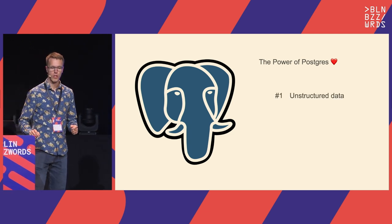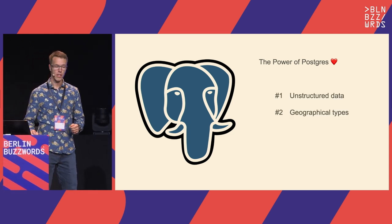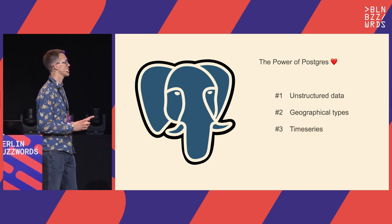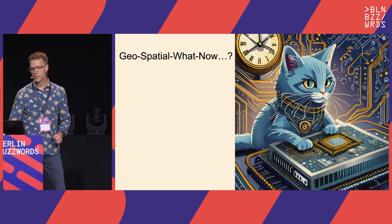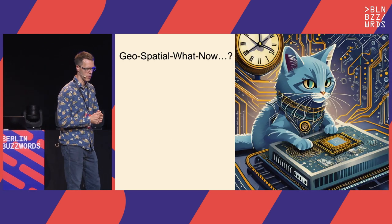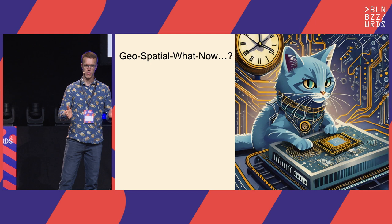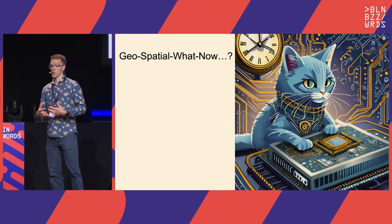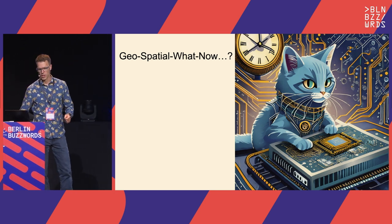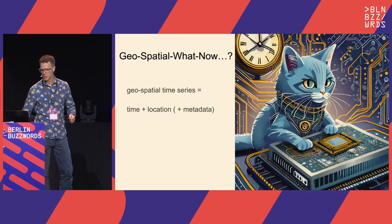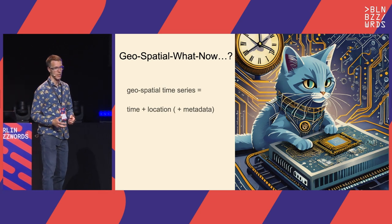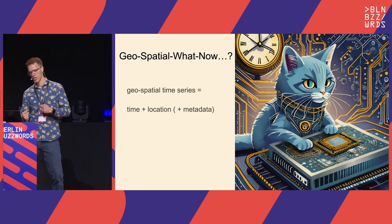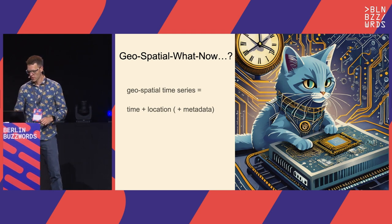I want to talk about unstructured data, schema, geographical types, and probably the most important thing, time series in Postgres. Geospatial time series — what now? You guys probably know what time series is. Geospatial time series is just time series with a location added to it. It's not magical, but it's a really fancy word to use. So you have time, location, and some metadata added to it.